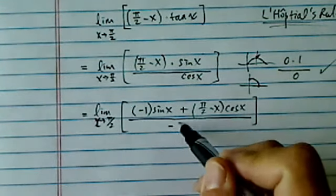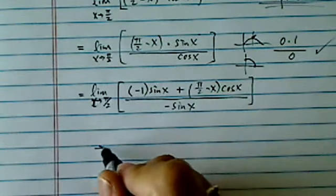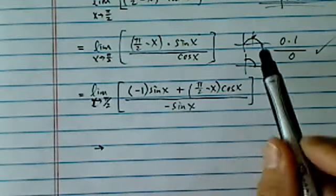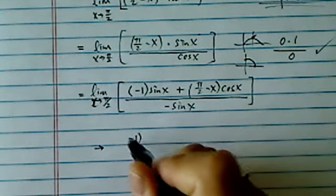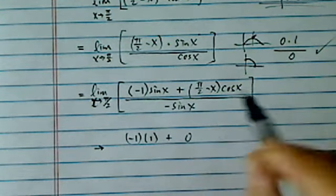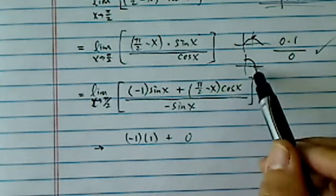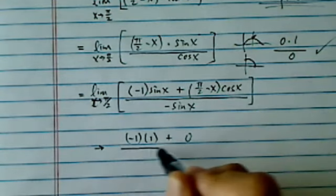This is different from the quotient rule. So here, I'm going to have minus sine x on the bottom. Now let's evaluate it. Sine of pi over 2, as we said earlier, is 1. So minus 1 times 1, plus this chunk is going to go to zero, because pi over 2 minus pi over 2 is zero, times cosine x. It's also zero, which is a good thing.